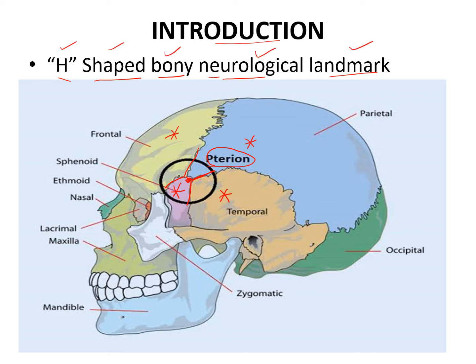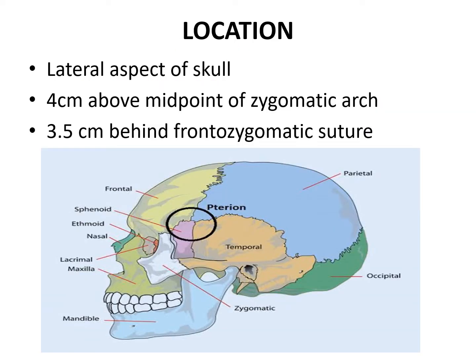Why is it called a neurological landmark? Because there are certain structures here which are very important — we will be seeing that in the later slides. As you can see in this image, this is the lateral aspect of the skull, and the Pterion is located in the lateral aspect of the skull.